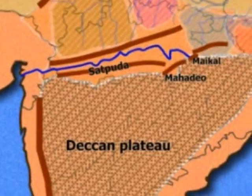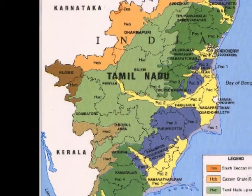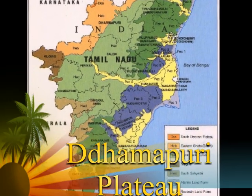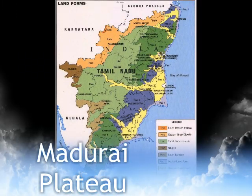Dharmapuri plateau, Coimbatore plateau, and Madurai plateau are found in Tamil Nadu.